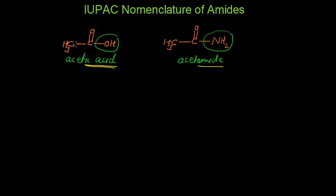If you see the IUPAC name of both the compounds, we can write the numbering to these compounds. This is carbon number 1 and carbon number 2. Here we have 2 carbons, so this will become ethanoic acid. Here also we have 2 carbons. While giving the IUPAC names to amides, we must write the prefix because we have 2 carbons.